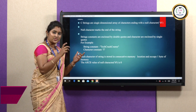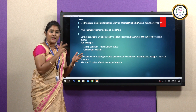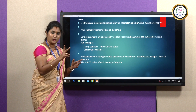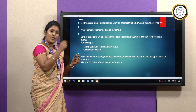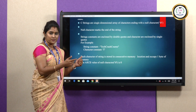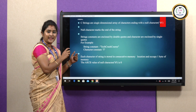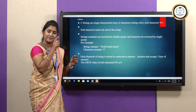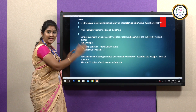Memory allocation for a string is based on its data type. For integers, we have two bytes of memory allocation. For strings, we have only characters, and for each and every character, we allocate one memory space. The end of a string is denoted with the help of a null character, which has an ASCII value of 0. It does not allocate any memory space but is denoted at the end.